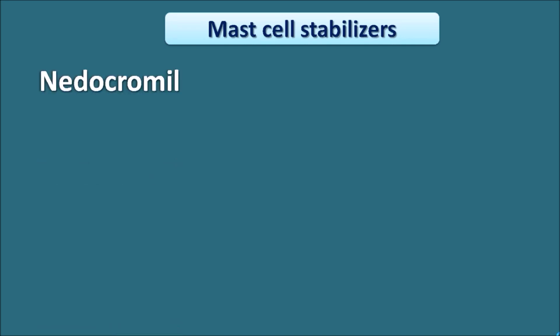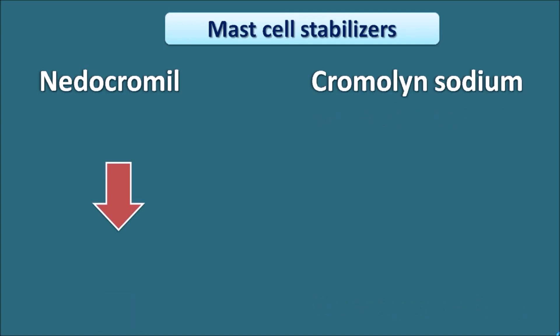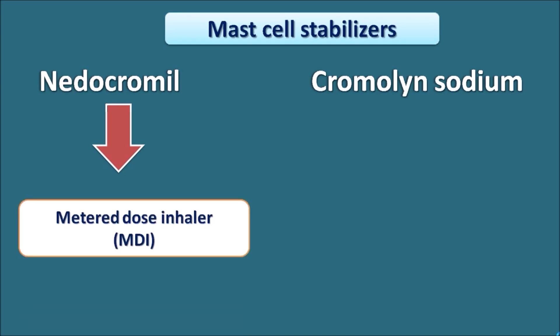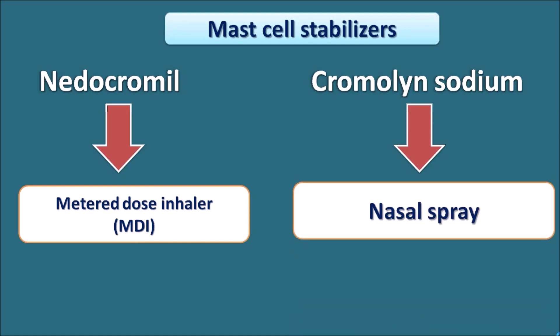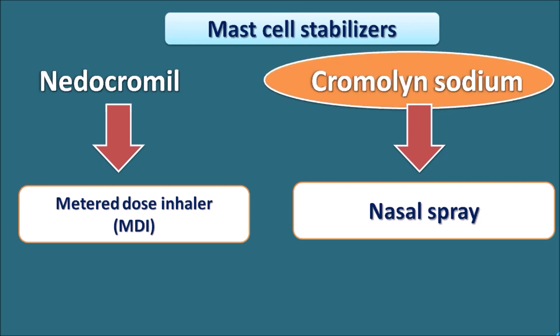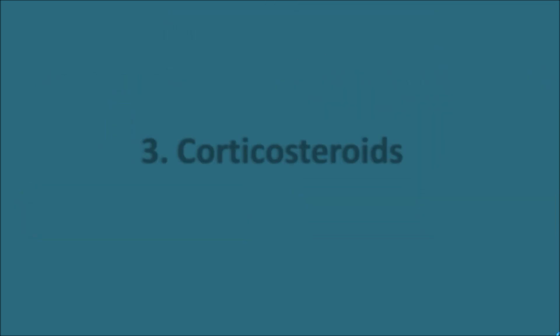There are two drugs in the mast cell stabilizer category: nedocromil and cromolyn sodium. Nedocromil is given as a metered-dose inhaler as an aerosol, whereas cromolyn sodium is given as a nasal spray. So cromolyn sodium is the mast cell stabilizer drug given as a nasal spray.